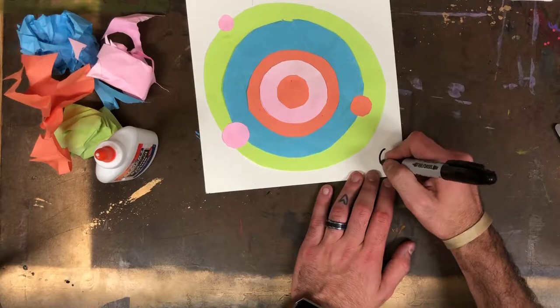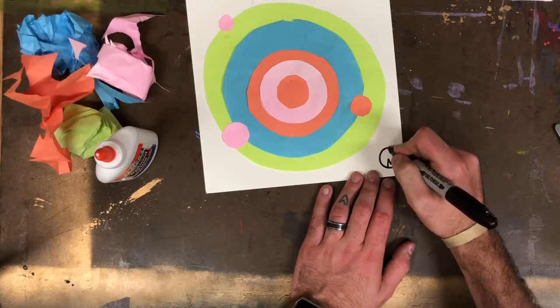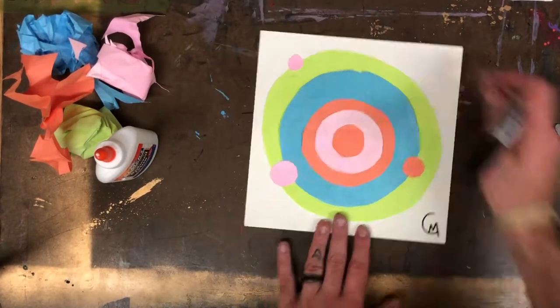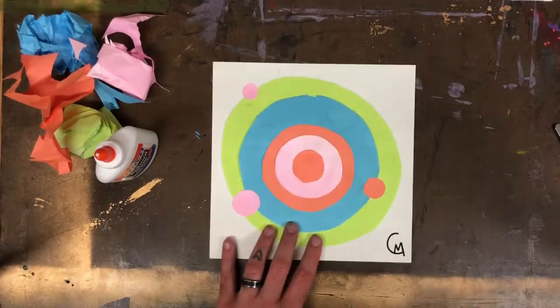My final step is to put my signature on the bottom right corner of my paper so everybody knows that Cole Melvin made it. You could do the same.